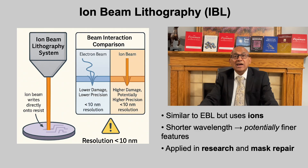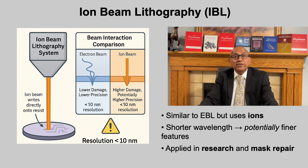Ion beam lithography operates on similar principles as EBL but uses ions instead of electrons. Because ions are far heavier, their de Broglie wavelength is much shorter than that of electrons, which means in principle they can be focused into finer spots, achieving even higher theoretical resolution, sometimes below 10 nanometers. However, in practice, both ion and electron beam lithography reach comparable sub-10 nanometer resolution, since the limiting factors are resist chemistry, beam interactions and system stability rather than wavelength alone. The main distinction lies in the interaction with the substrate — ions, being massive, deliver more momentum and energy, which can cause implantation and surface damage. Thus, while ion beam lithography potentially offers higher precision, it trades off with slower speed and greater substrate impact, making it primarily a research or correction tool rather than a high-throughput fabrication method.